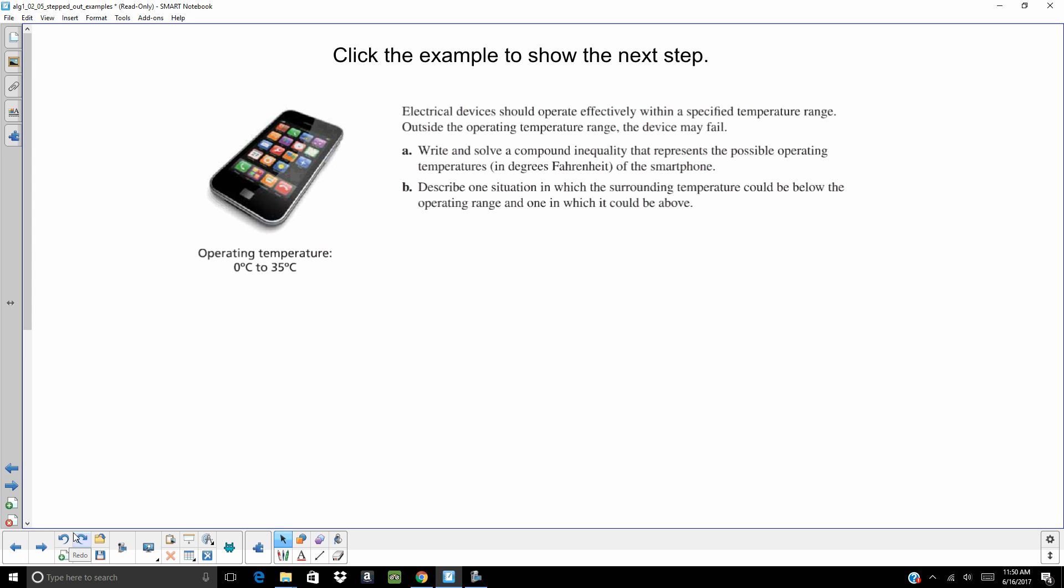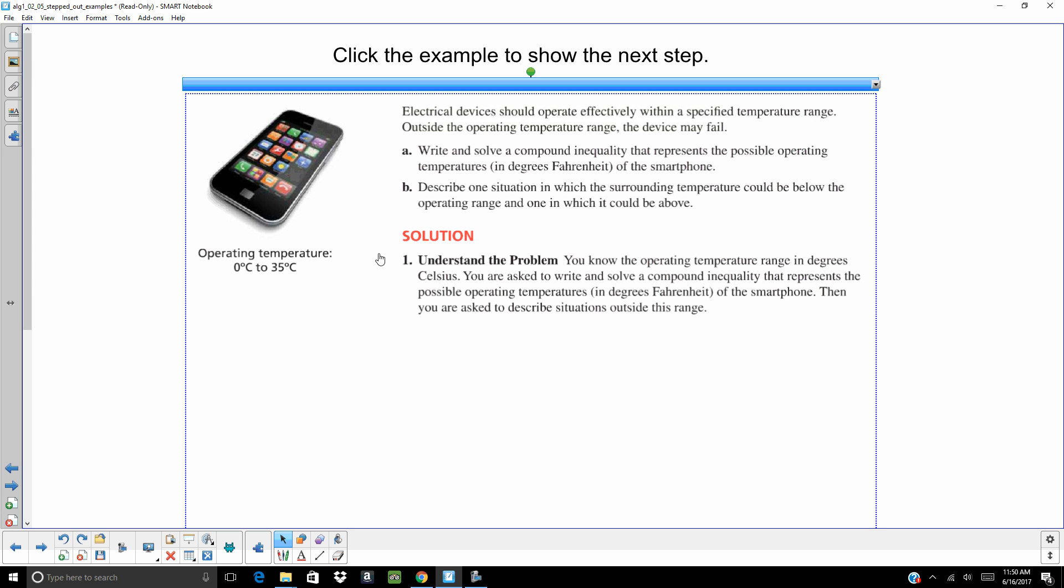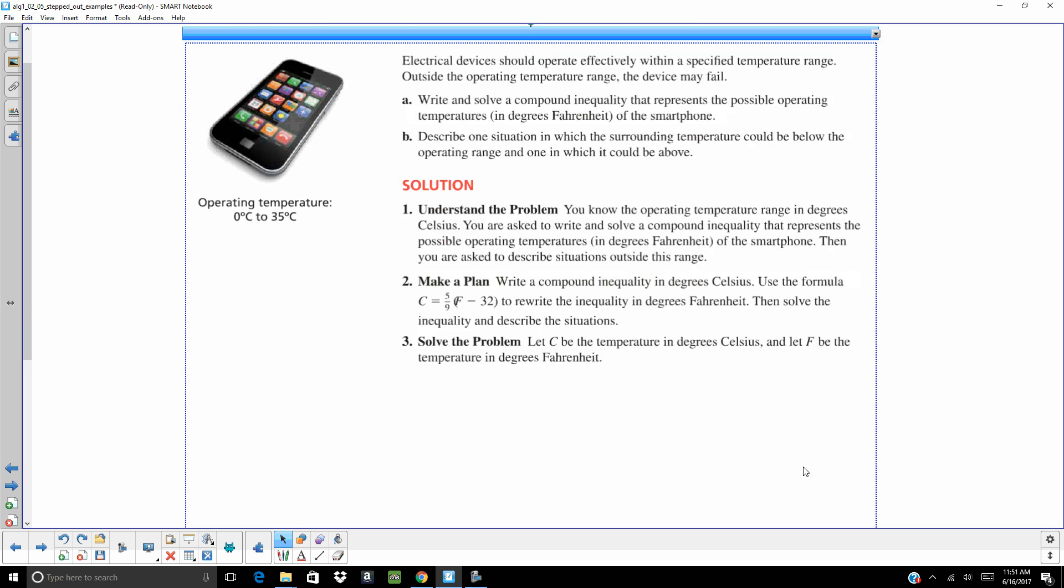On this one, we're going to have a word problem. Electrical devices should operate effectively within a specified temperature range. Outside that temperature range, the device may fail. Write and solve a compound inequality that represents a possible operating temperature in a prototype of the smartphone. And we can describe a situation and what the temperature could be below the operating range and one in which it could be above. Key here is Fahrenheit. But I'm noticing right away that they're giving this to us in Celsius. They're trying to be tricky. I'm not going to fall for that trick. So in part of my plan, I'm going to have to convert those temperatures to Fahrenheit.